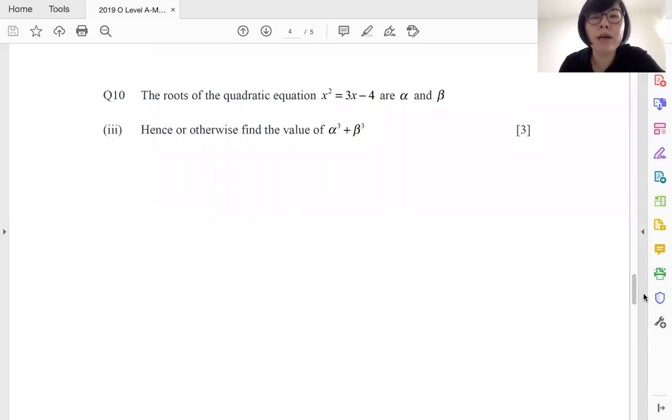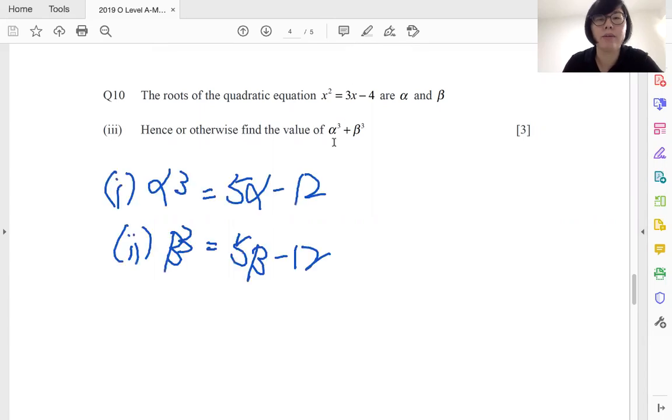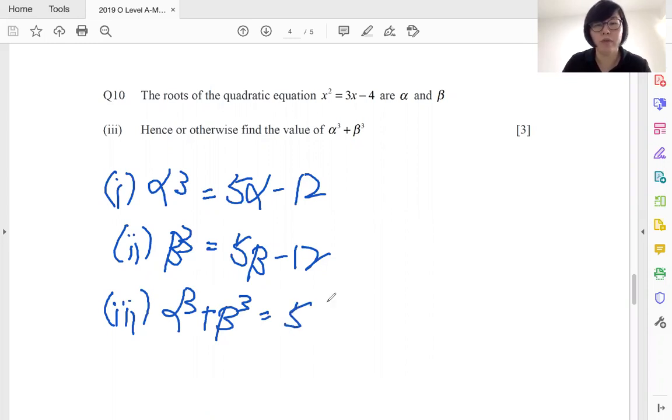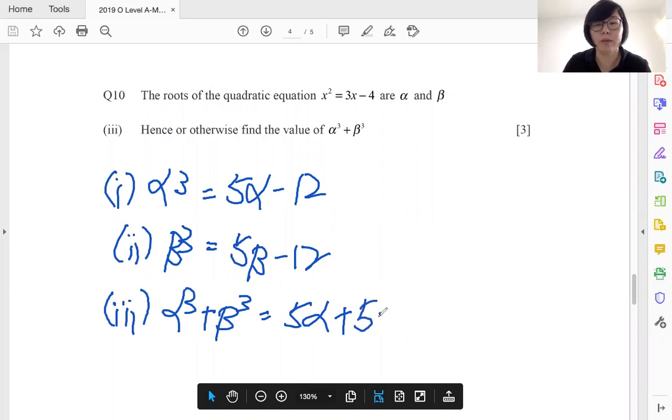Let's go on to part three. Hence or otherwise find the value of alpha cube and beta cube. Okay, now since I have this right now I can make use of the information. It's a three marks question, so let's get started. Part three they want to know alpha cube plus beta cube, so what do you do? Just add up the two of them, so you end up with 5 alpha plus 5 beta minus 24.